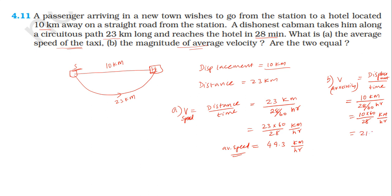The average speed is approximately 49.3 km per hour and the average velocity is approximately 21.4 km per hour. They are not equal because the distance and displacement are not equal — the path taken is different from the straight-line displacement, so average speed and average velocity differ.